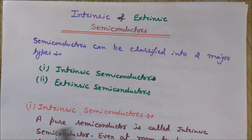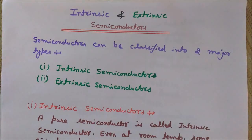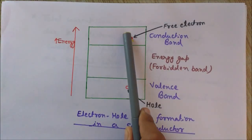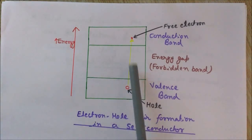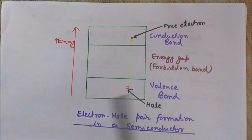Here is the classification of semiconductors: intrinsic and extrinsic semiconductors. First of all we will understand what are intrinsic semiconductors. Intrinsic semiconductors are the pure semiconductors. Let's now understand the concept of intrinsic semiconductors with the help of the energy band diagram. Here you can see this is the valence band and here is the conduction band, and this is the energy gap between these two bands, known as the forbidden band.